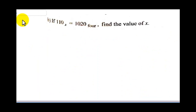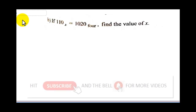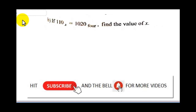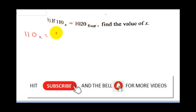Question 5B says: if 110 base X equals 1020 base 4, find the value of X. To solve this, we represent the numbers. Counting positions from right to left: for the left side we have positions 0, 1, 2, and for the right side positions 0, 1, 2, and 3.